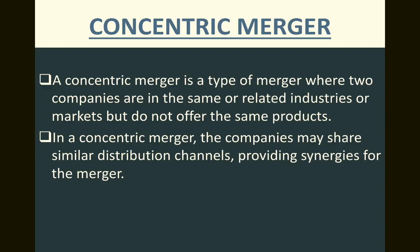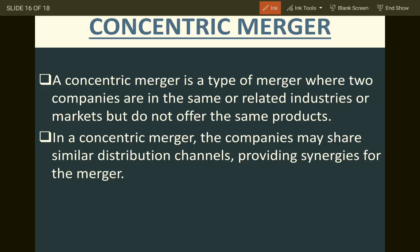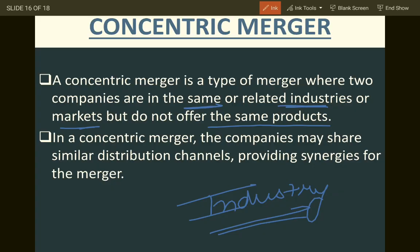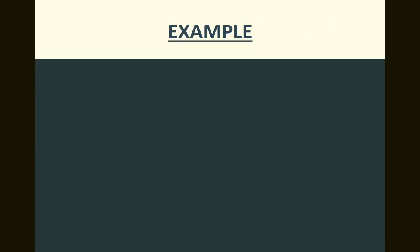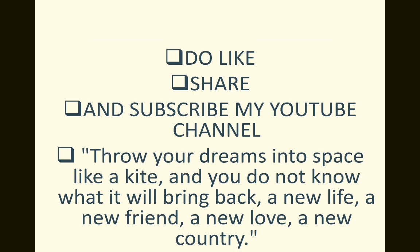A concentric merger is a type of merger where two companies are in the same or related industry but do not offer the same product. The industry is the same but the products they deal with are totally different. For example, within FMCG, one company deals with soap and another deals with biscuits — same industry, different products. In a concentric merger, the companies may share similar distribution channels, providing synergy for the merger.